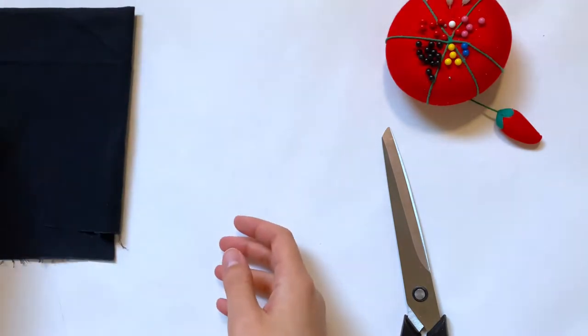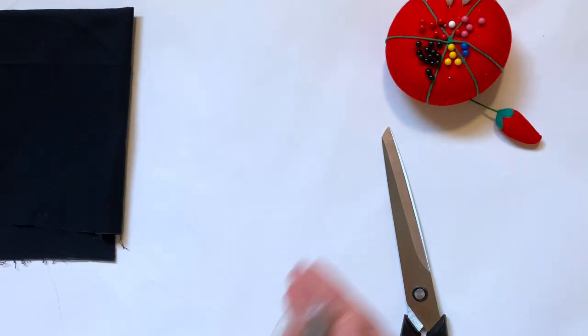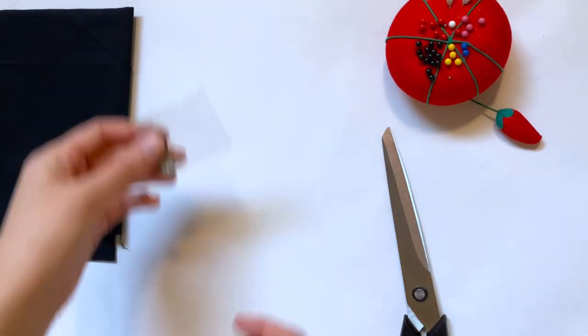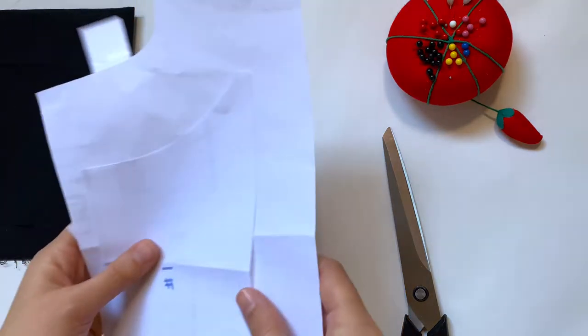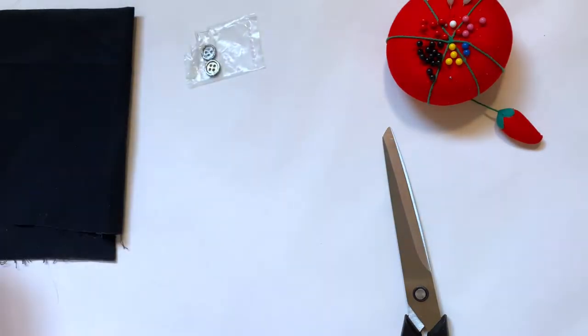To make this you're going to need a sewing machine, pins, scissors, fabric—I'm just using plain black but you can even use denim—and some buttons. You also need some patterns and I'll have the ones I made linked in the description box below.